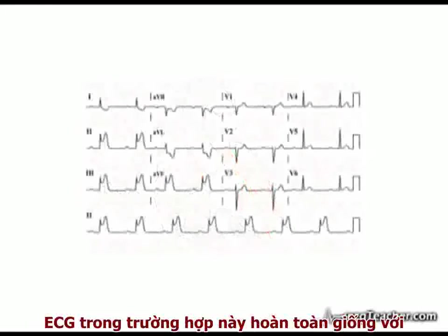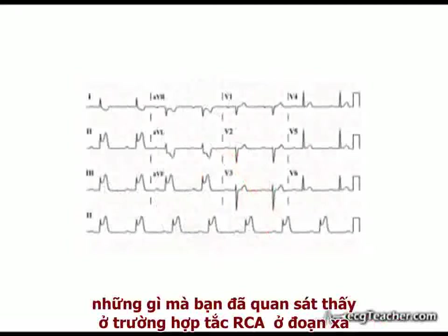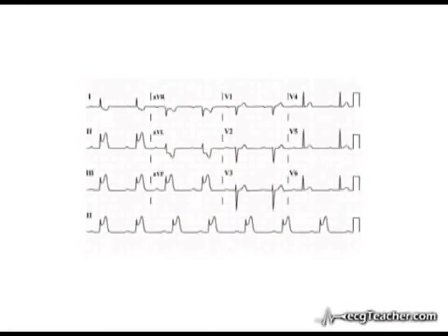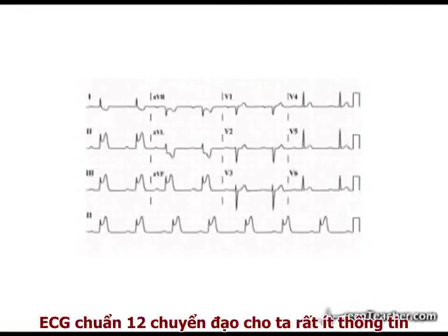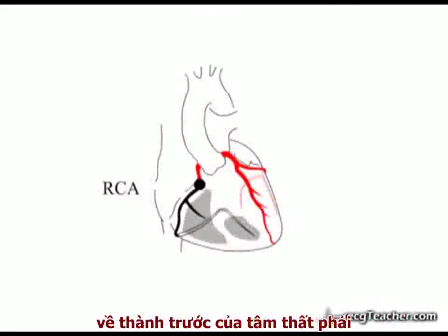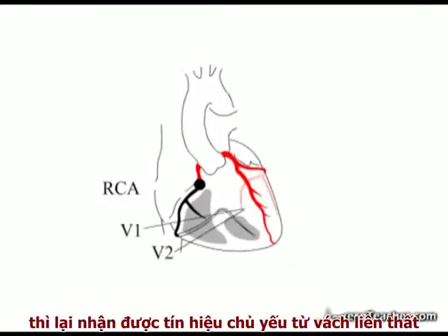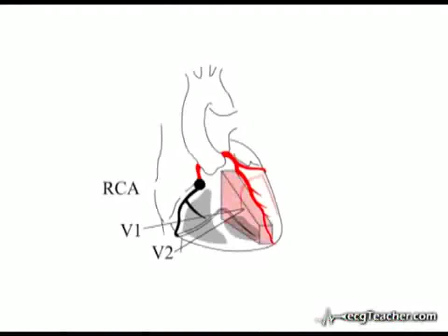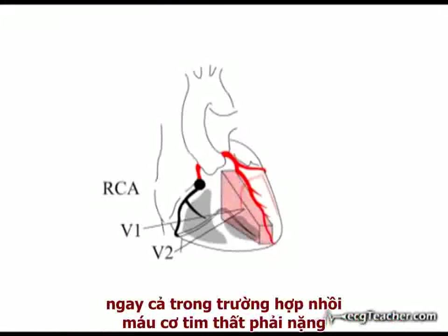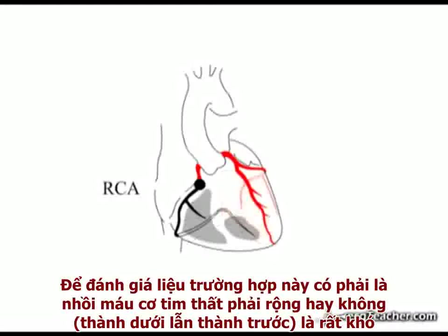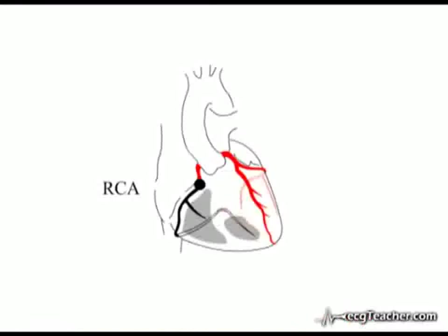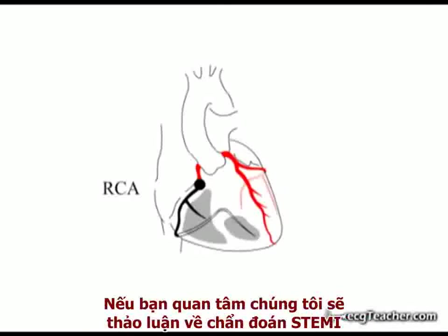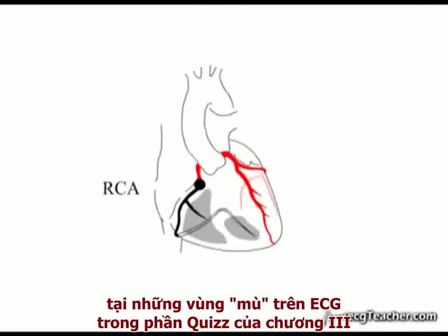The ECG in this situation is virtually identical to that observed with distal RCA obstruction. In fact, the standard 12-lead ECG gives very little information about the free or anterior wall of the right ventricle. Even leads V1 and V2, which face this surface of the ventricle, are dominated by signal from the septum, and may show little or no change in the presence of significant RV infarction. Determining the presence or absence of extensive right ventricular involvement in ST elevation MI is challenging but is of great clinical importance. We will discuss the diagnosis of ST elevation MI in ECG blind regions of the heart in the quiz section.